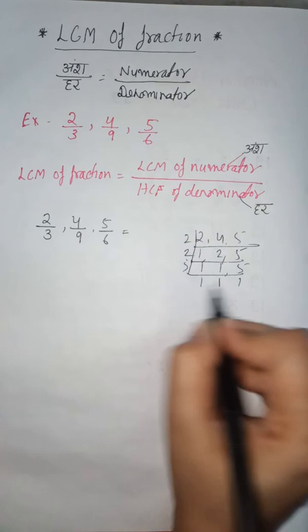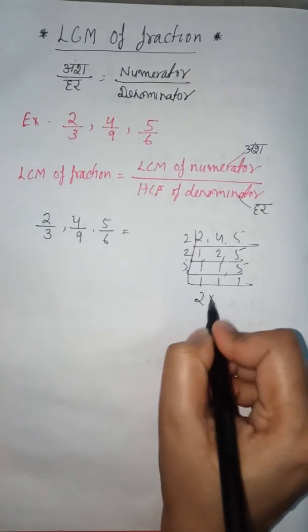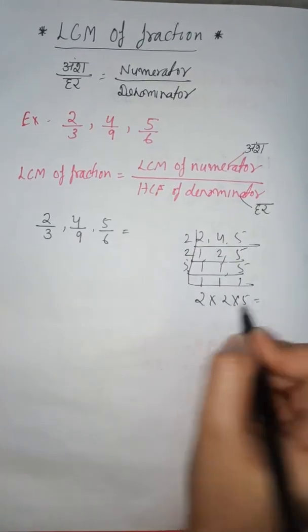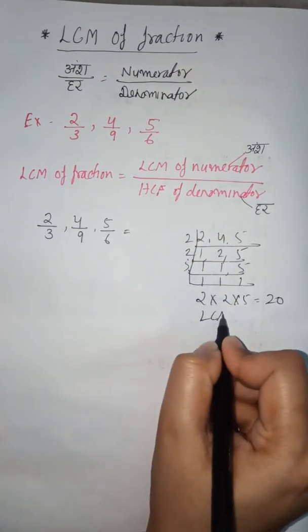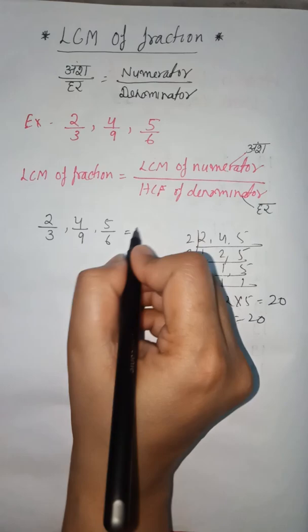Again, 5 divides 5. Five 1s are 5. So 2 into 2 into 5 equals 20. Here is your LCM. LCM is 20.